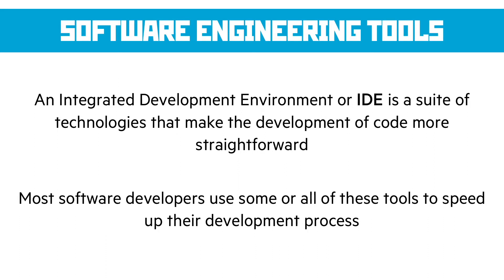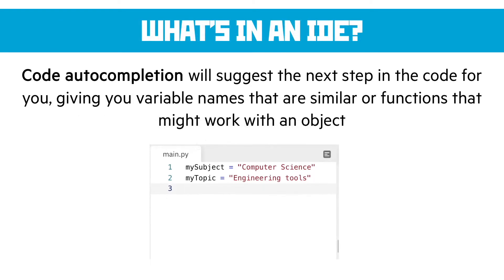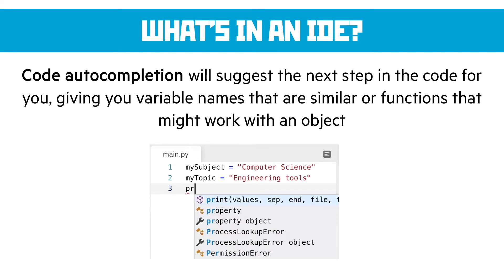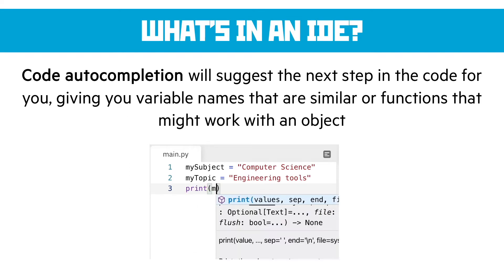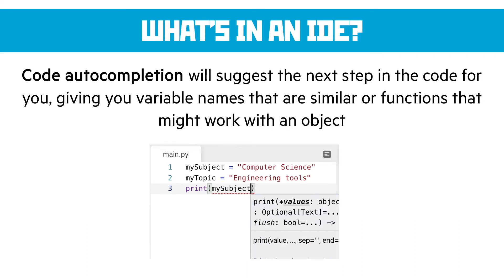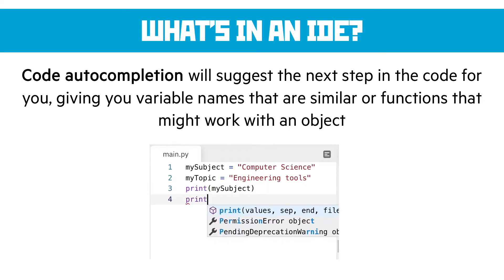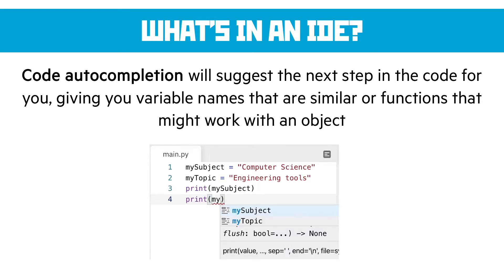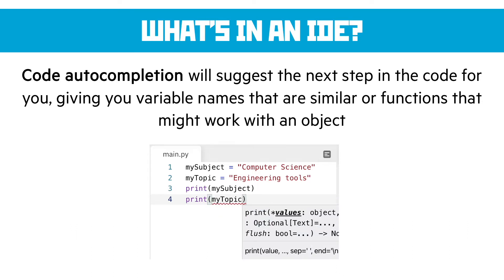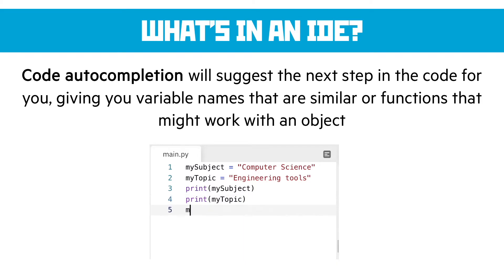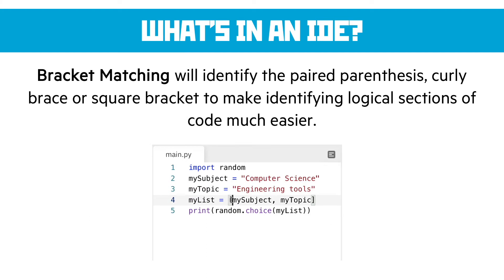Most software developers use some or all of these tools to speed up their development processes, and you'll see how many of these look familiar to you. The first is code autocompletion — as I'm typing I'm getting suggestions for functions and variable names, and I'm just pressing the tab key to complete the autocompletion. This is brilliant because it means I'm not doing quite so much typing, especially if I'm reusing variables. Bracket matching: when you click on a bracket — either a parenthesis, a curly brace, or a square bracket — it'll show you the matching bracket.